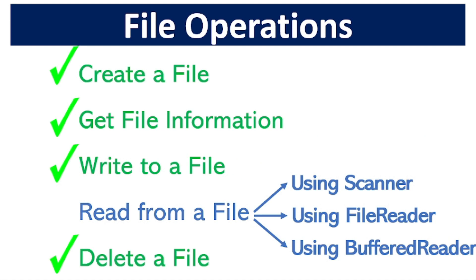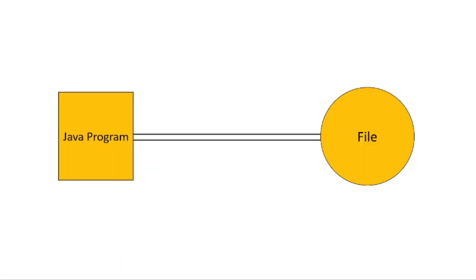We will replace data in Java programs using an external file. We need to use data in the Java program via a stream, so we need to control the speed of data flow in the Java program.